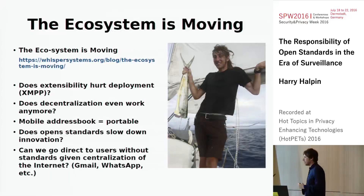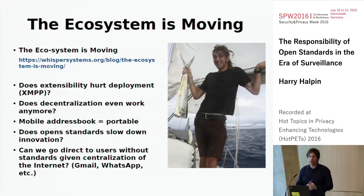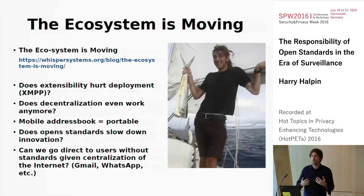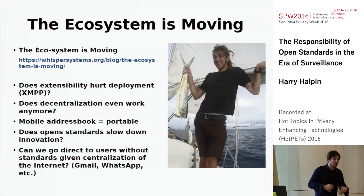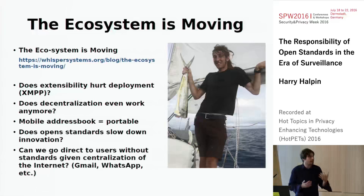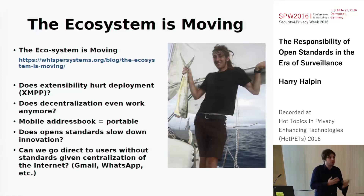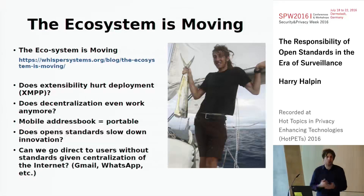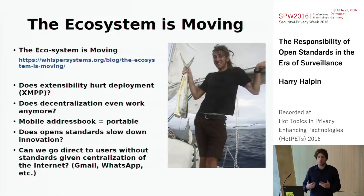There was a theory that if you want to reach users, standards may be the way — for example, if you want to put something in existing web browsers you have to go through open standards. But that may not be the case in certain market sectors: Gmail for email, WhatsApp for messaging — it may make more sense to just deploy the protocol at key points where there are already billions of users.